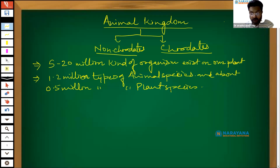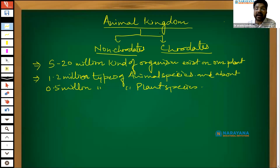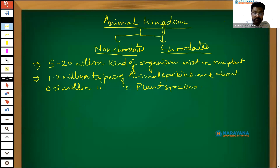Coming to the next point: previously, animals were divided according to our ancient system of classification. Do you have any idea regarding the ancient Indian system of classification of animals? I am talking about the Indian system, not any other system.